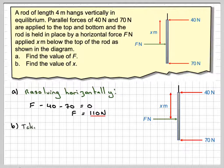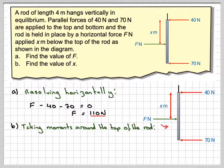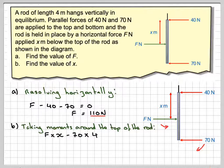In order to find this distance, we need to take moments about this point here, so we don't have to worry about this force. Going anti-clockwise, which is this way, we have F times X, and going this way, we have 70 times 4. As it's in equilibrium, that will equal 0.